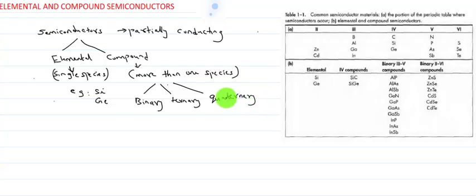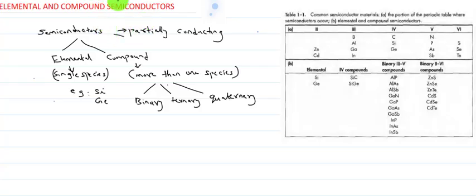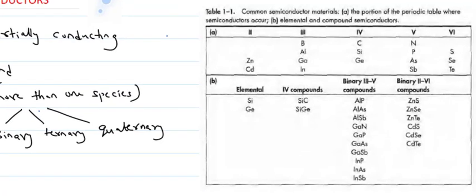Compound semiconductors consist of more than one species of atoms. They are again classified as binary compound semiconductors, ternary, and quaternary. Binary means it consists of two species of atoms, ternary means three, and quaternary means four elements. If we look at the table on the right side, column four indicates the elemental semiconductors, mainly silicon and germanium.